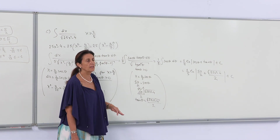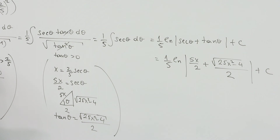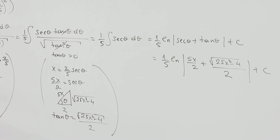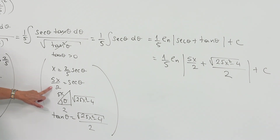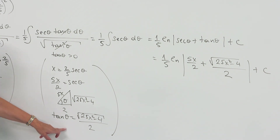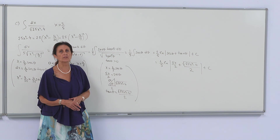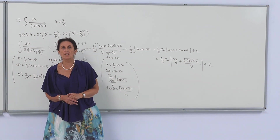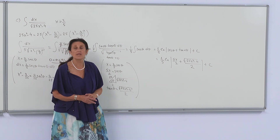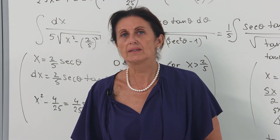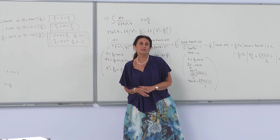The integral of secθ is ln|secθ + tanθ|. From the substitution, secθ = 5x/2. Sketching my triangle, I find tanθ = √(25x² − 4)/2. Replacing gives the final result of the integral. Thank you for listening. I hope this video will help. If you want to learn more, read the book and look for other references.